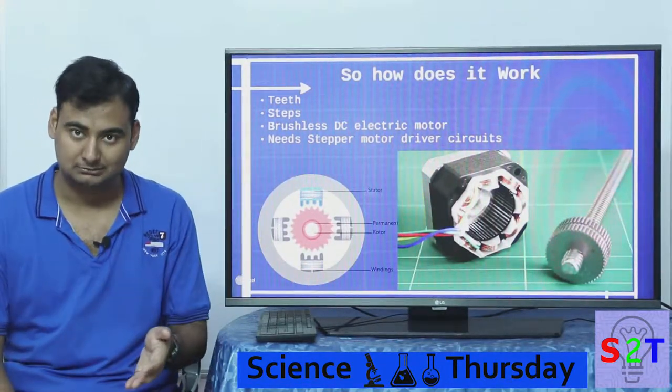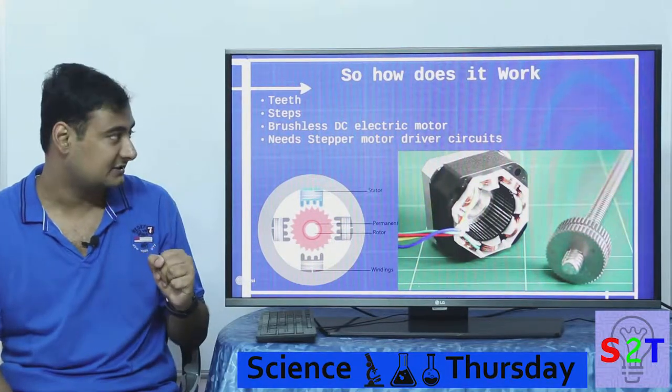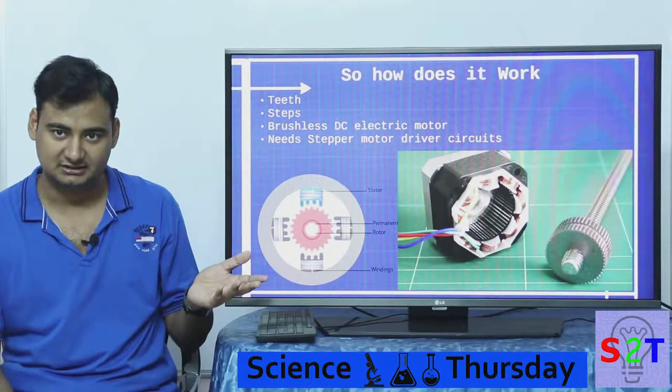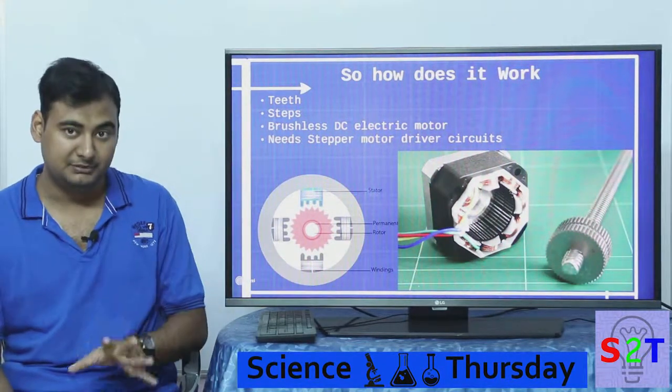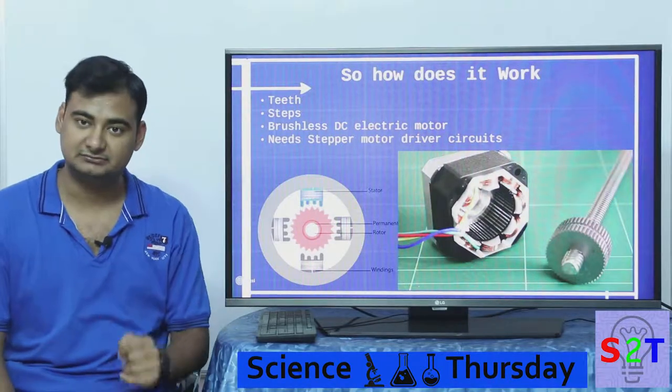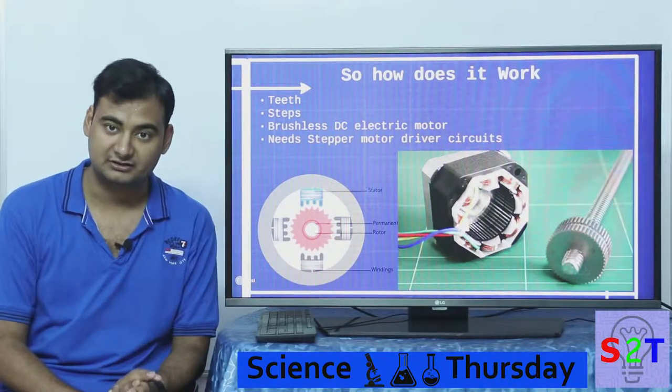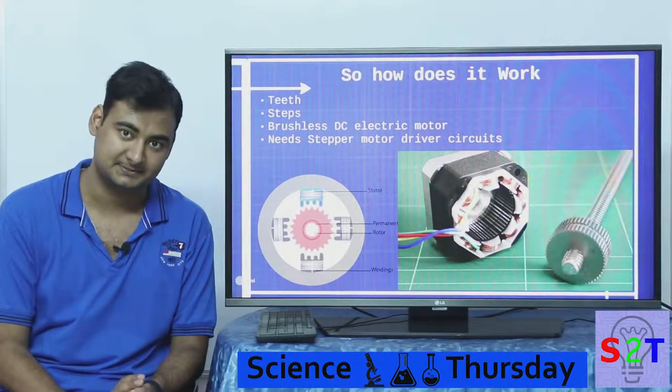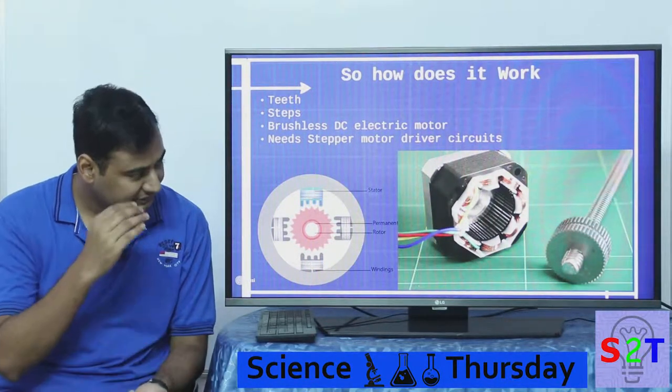If you give it the signal and it is capable of doing it, like you can't move a five-ton car with this, so if it can handle the load it will do the job. That's why the open loop part is. And the construction of it is more or less like a brushless DC motor.